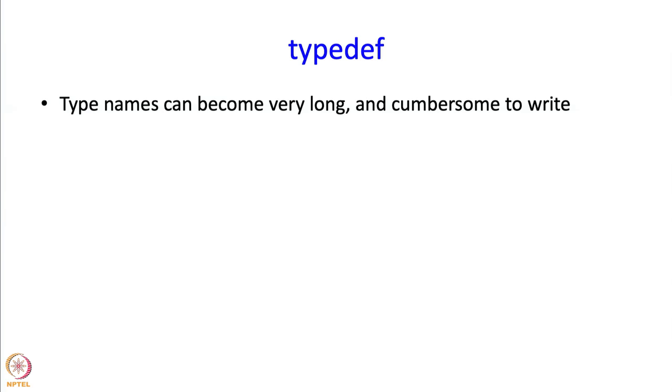Let me first observe that type names can become very long and cumbersome to write. For example, we have already seen that that fare table we constructed had this type. We have to write it when we define that variable.